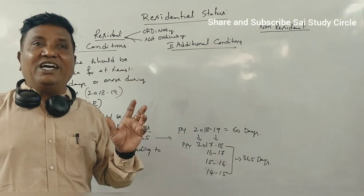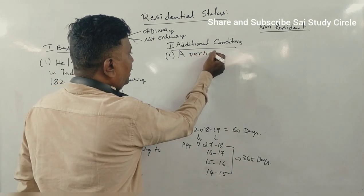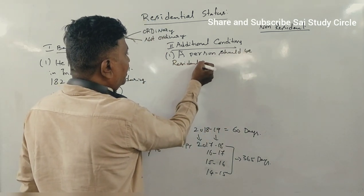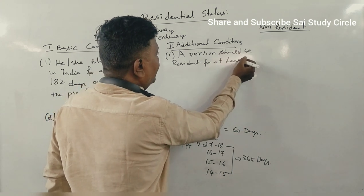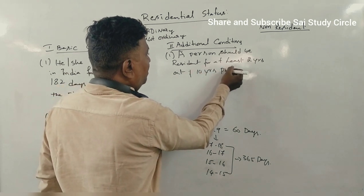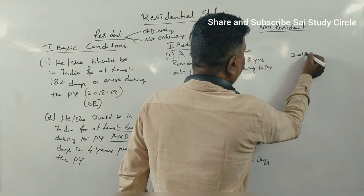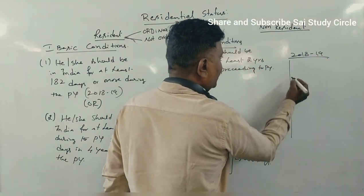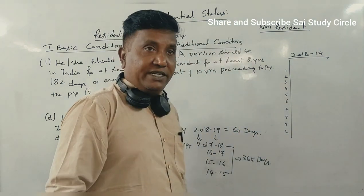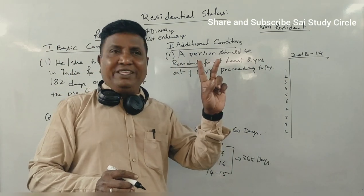Now, what are the two additional conditions? The first additional condition is that a person should have been resident for at least 2 years out of the 10 years preceding the previous year. So if our previous year is 2018–19, we look back at the 10 preceding years — from 2017–18 back to 2008–09 — and the person should have been a resident for at least 2 of those years.